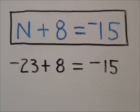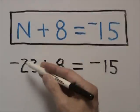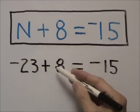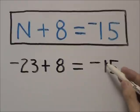To check our answer, we substitute the variable n for negative 23. Adding 8, we do indeed get negative 15, so our answer is correct.